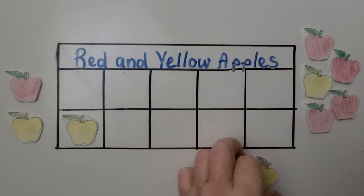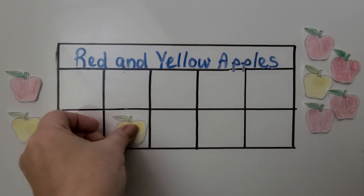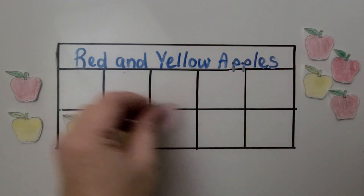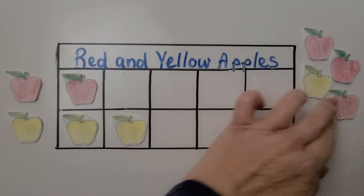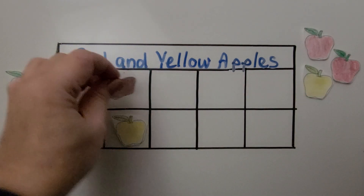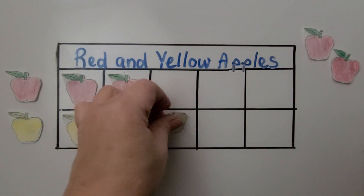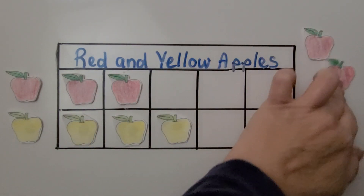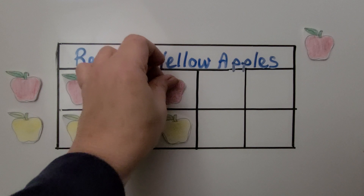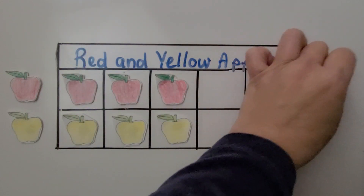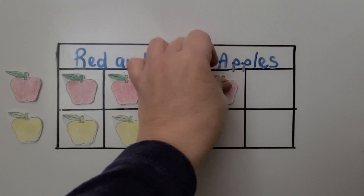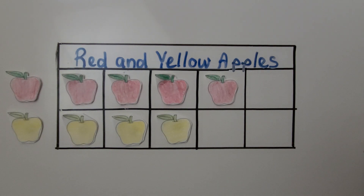Here we have another yellow. Here we have a red. And another red. We have another yellow. Another red. And one last red one.